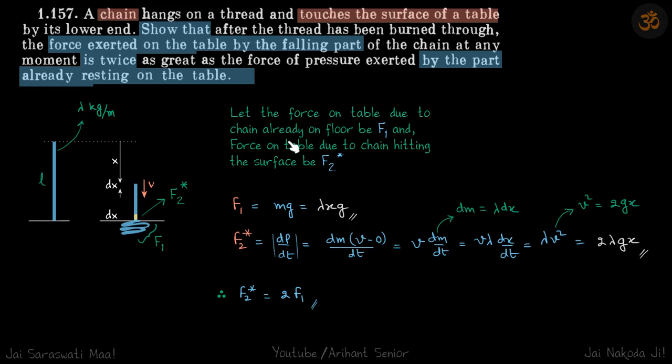So, whatever we discussed, let's just read: let the force on table due to chain already on the floor be f1, and force on table due to chain hitting the surface be f2 star.